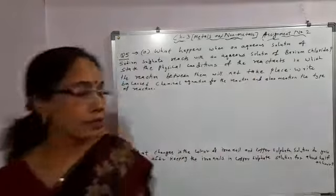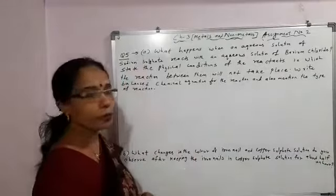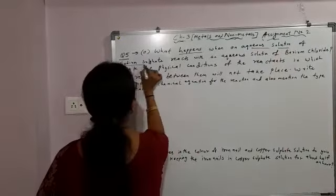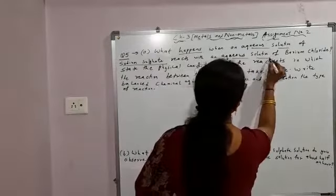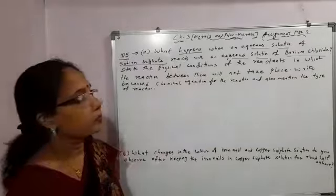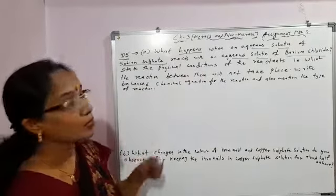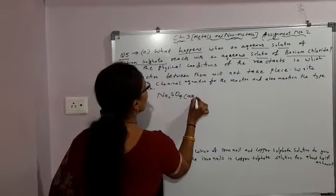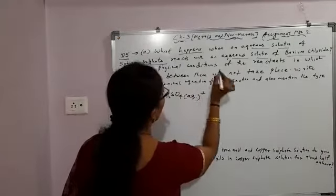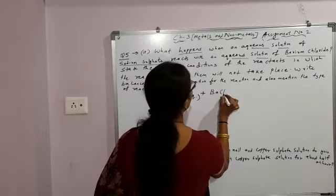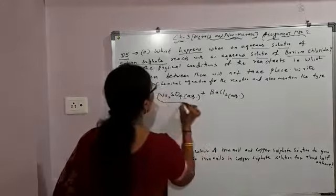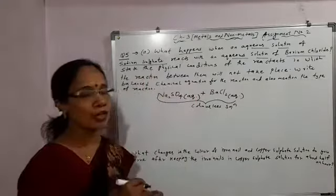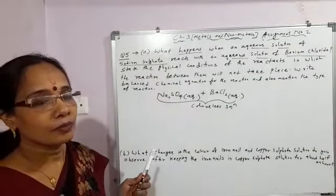Now students, your next question has two sub-parts. What happens when aqueous solution of sodium sulphate reacts with aqueous solution of barium chloride? Sodium sulphate formula is Na2SO4 (aqueous), reacting with aqueous solution of barium chloride. Both sodium sulphate and barium chloride are colourless solutions.